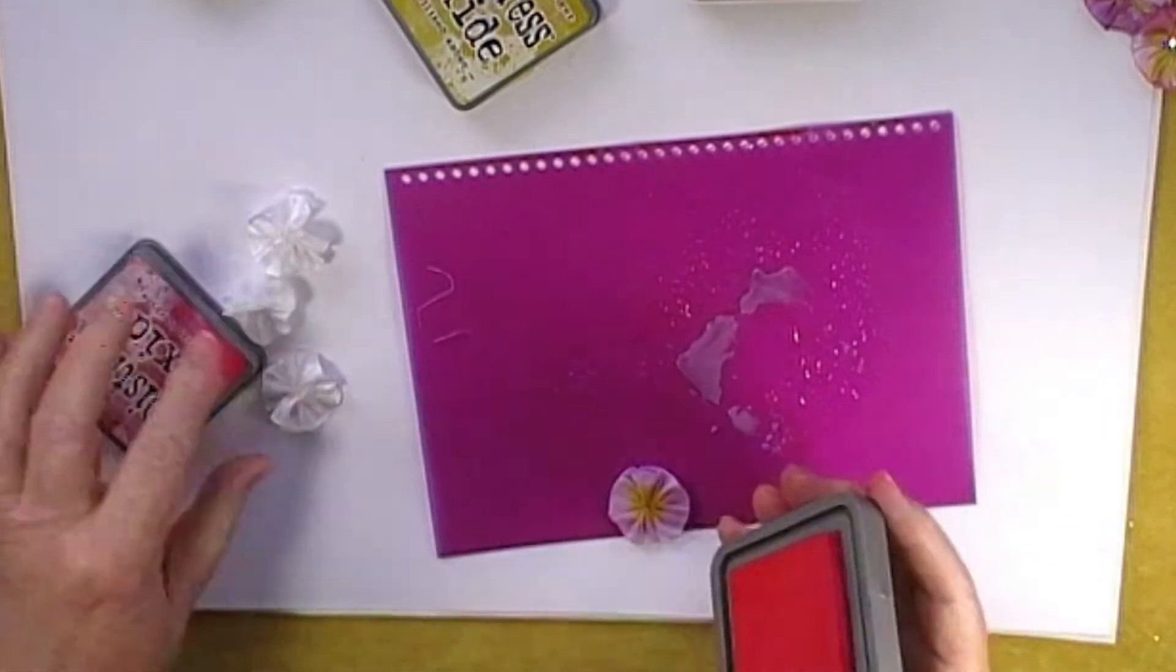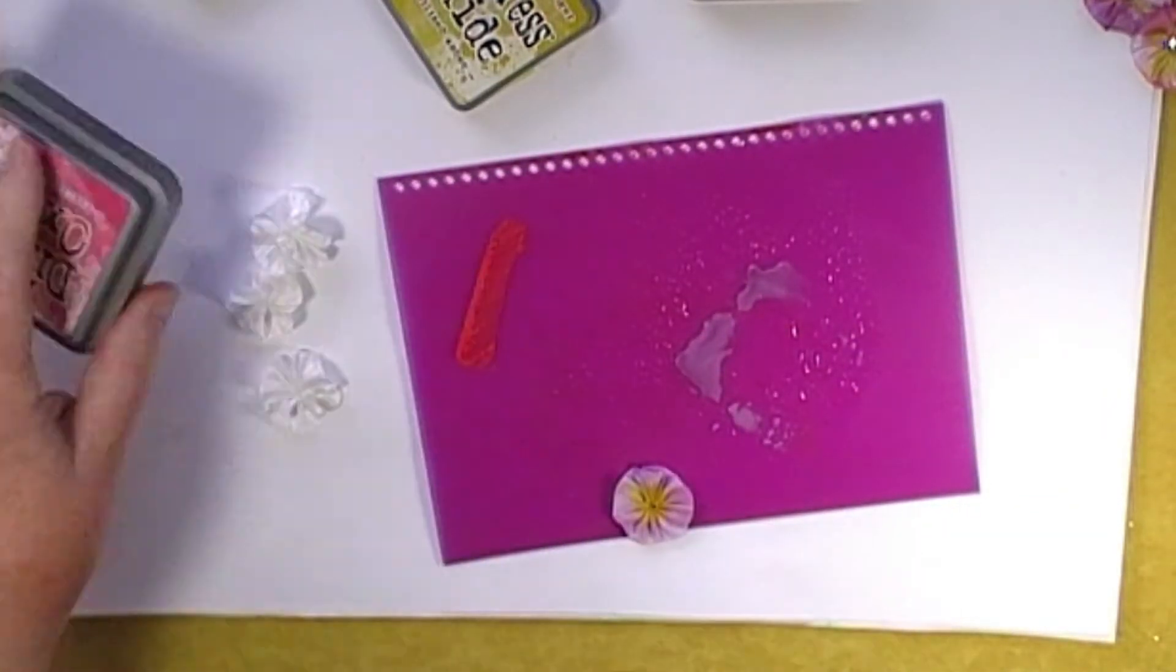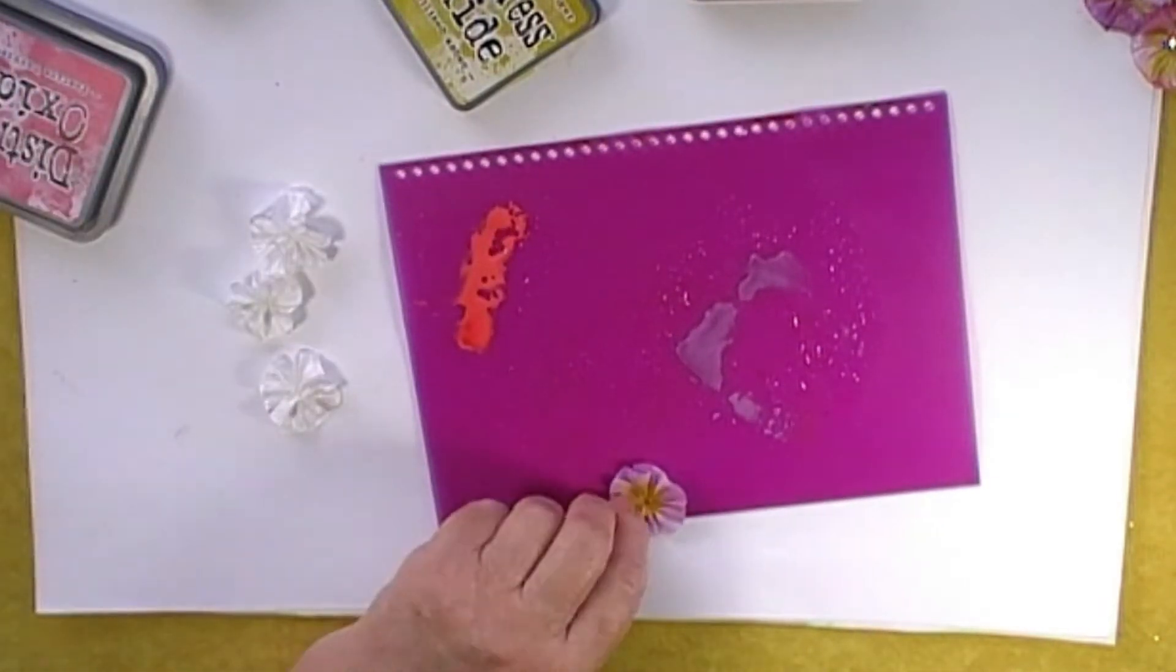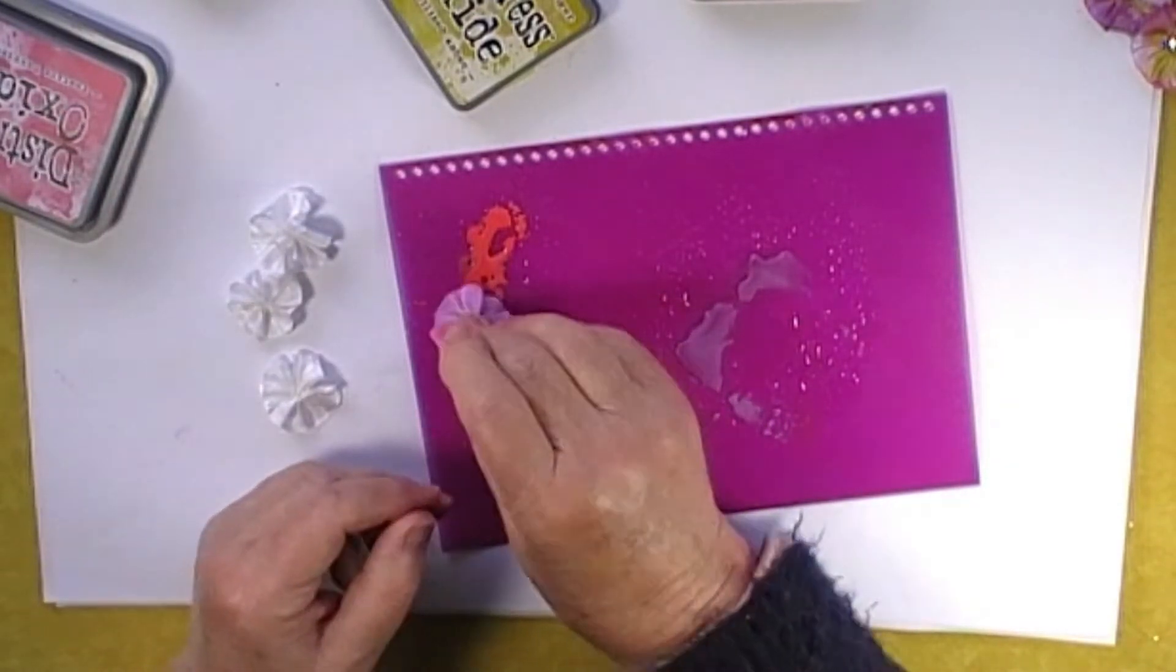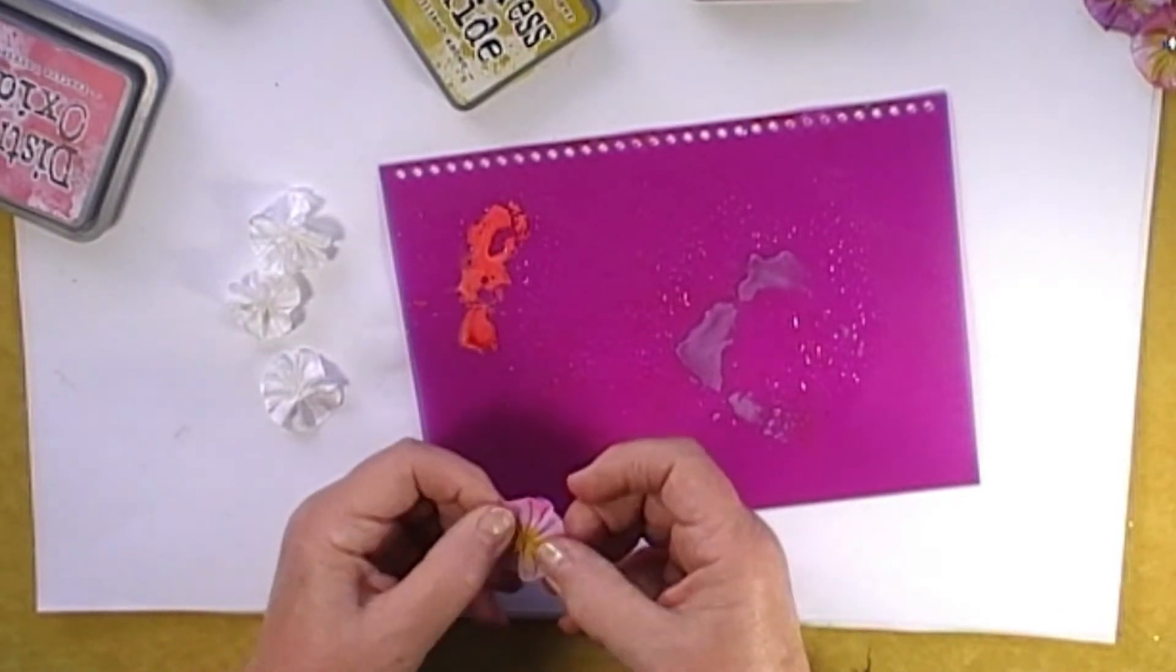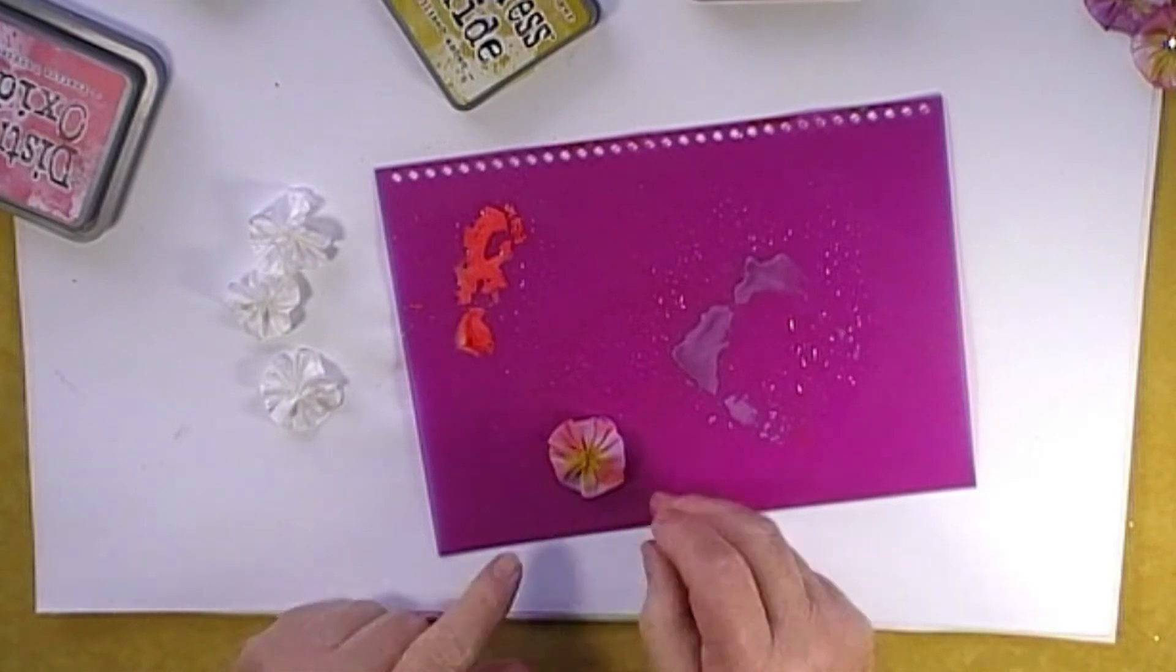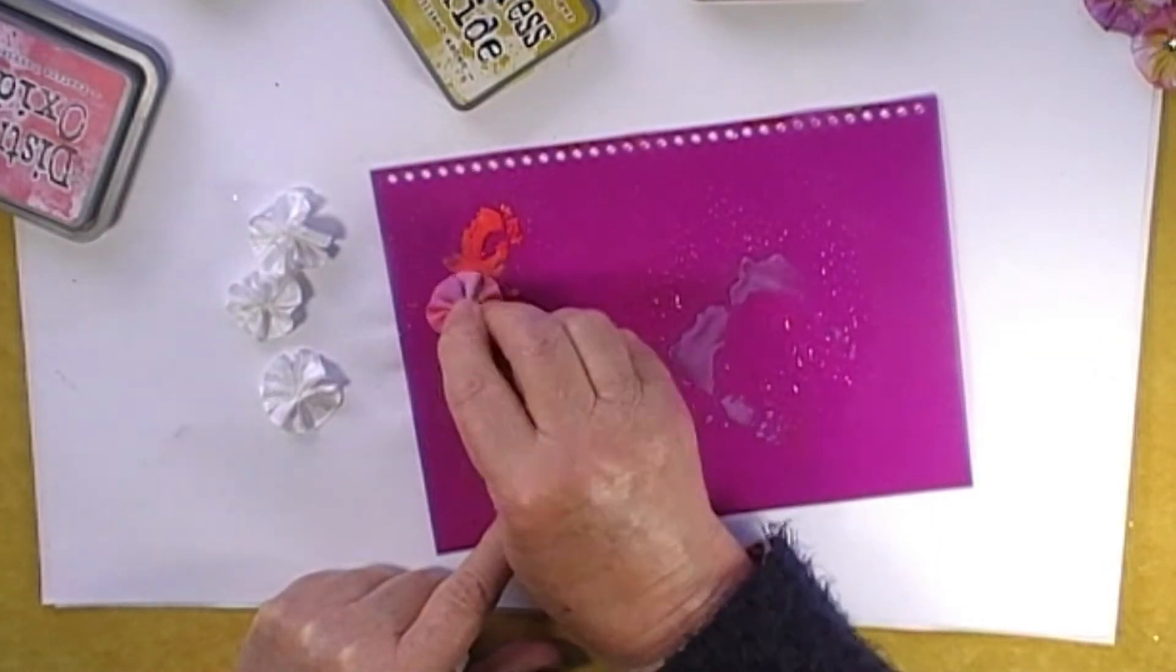You just keep doing that until you're happy with it. Might introduce a little bit of pink. You only need a tiny, tiny bit. A little bit goes a long way. Now if you find you get too much on there, I'll give this one a good soaking just to show you.